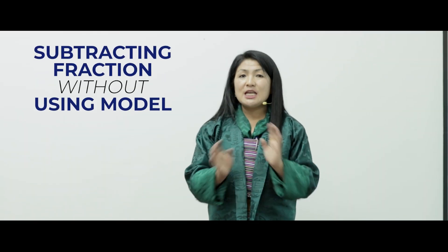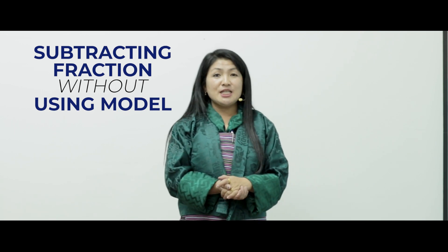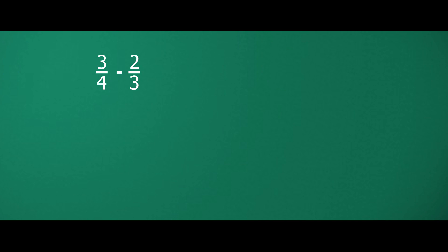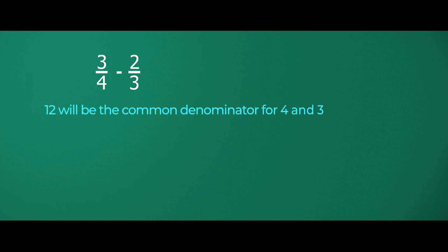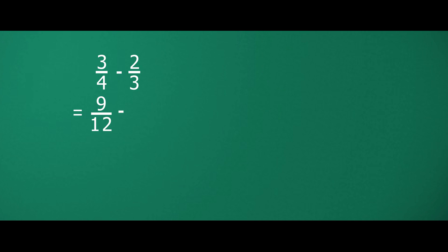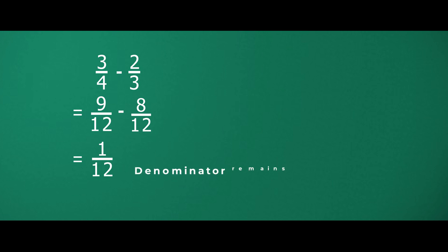Subtracting fractions without using a model. We have three-fourths minus two-thirds. Again, we are going to take two-thirds from three-fourths. We will find the LCM of four and three, which is twelve. The equivalent fraction of three-fourths is nine over twelve, and the equivalent fraction of two-thirds is eight over twelve. When we subtract the numerators, we get one, and the denominator remains the same.